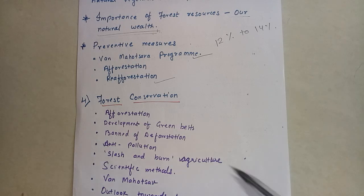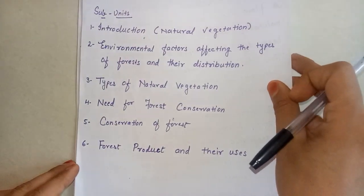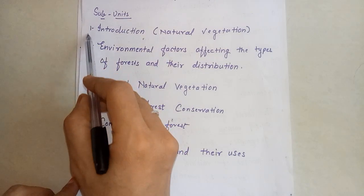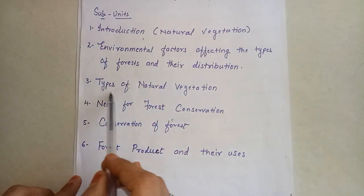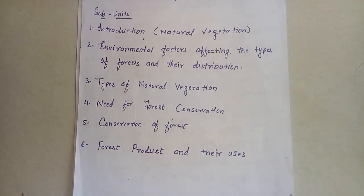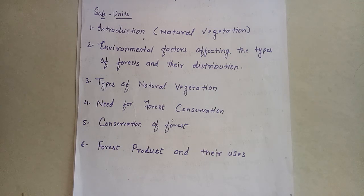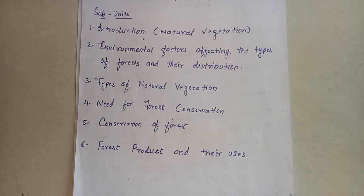So children, we completed our three points — types of natural vegetation. You have to prepare the inside questions and go through your chapter. Read it very carefully and do your work very honestly. Have a good day. God bless you.